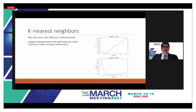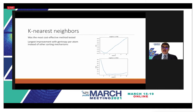One of the better-performing methods was k-nearest neighbors — it was the most computationally cost-effective method tested and showed the largest improvement when using gentropy per atom compared to other representations. In the optimization plot comparing mean absolute error and root mean square error versus number of neighbors, three nearest neighbors appears to be most effective.